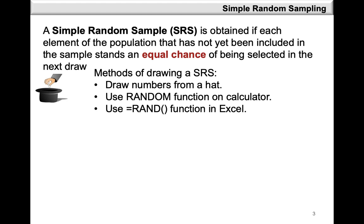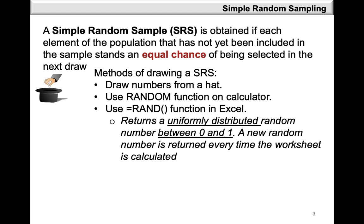The third method consists of using the RAND function in Excel. With the RAND function, a uniformly distributed random number between 0 and 1 is returned for every element. However, since there is no seed value given to the RAND function, every time the worksheet is calculated a new number is generated. So in order for these numbers to remain fixed, click on the Formula tab, then click on Calculation Options, and select the Manual option so that your numbers remain fixed and do not change every time the worksheet is calculated.